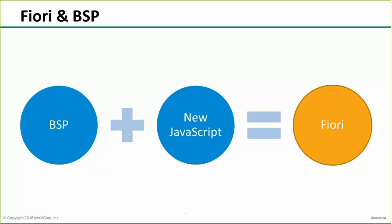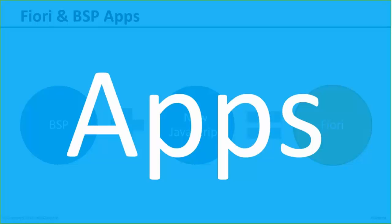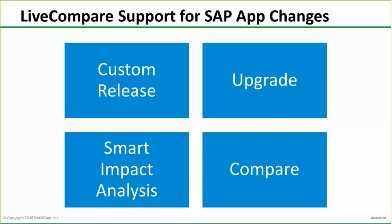Just to talk about Fiori — what is Fiori? Fiori is basically based on NetWeaver and enables any kind of SAP application to be used on mobile devices. The components in the back end are business server pages, BSP, and then in the front end on the Fiori dashboard that will be JavaScript, which makes up the Fiori application or app. LifeCompare supports any kind of changes or lifecycle events for those apps. Custom releases can impact your web applications, support pack upgrades can affect back-end objects. What we're going to show today is a smart impact analysis on Fiori apps with BSPs and a comparison of BSPs.